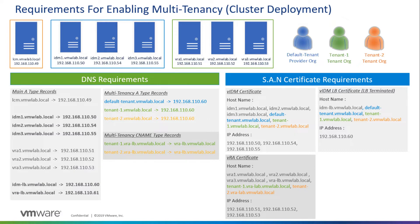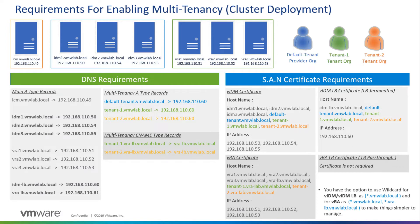For VRA, there is only one certificate needed because the VRA load balancer is configured with SSL pass-through — no certificate is required on the load balancer itself. The VRA SAN certificate hostname must include all three VRA appliance FQDNs (VRA1, VRA2, VRA3), the VRA-LB.vmwlab.local FQDN, and the two CNAME records for tenant-1 and tenant-2. For wildcard simplification, use *.vmwlab.local and *.vra-lb.vmwlab.local since there are two domain namespaces.